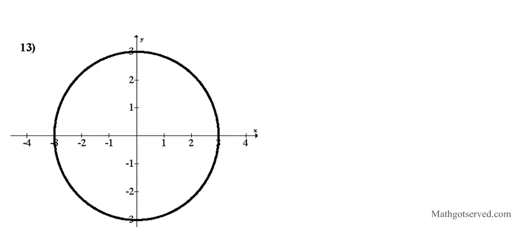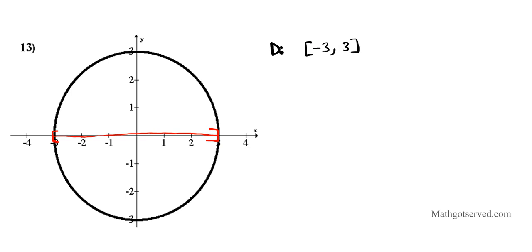Now let's go to the next example. Looking at this graph of a relation, we'll find the domain and range first. The domain is the width — the projection of the graph onto the x-axis. We notice it starts from negative 3 and goes all the way to positive 3. Both endpoints are included, so we use brackets. Using inequality notation, the domain is negative 3 less than or equal to x less than or equal to 3.